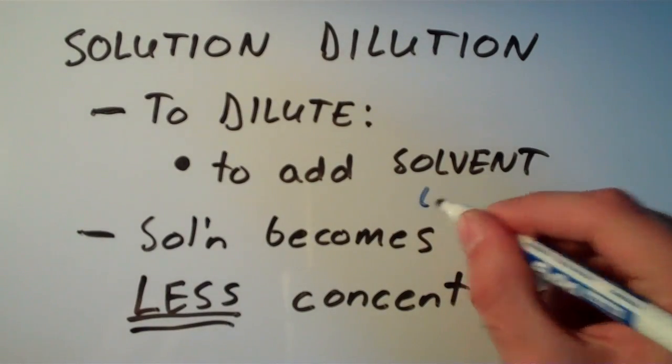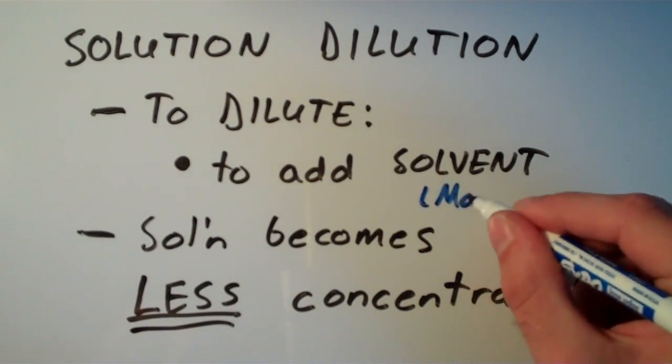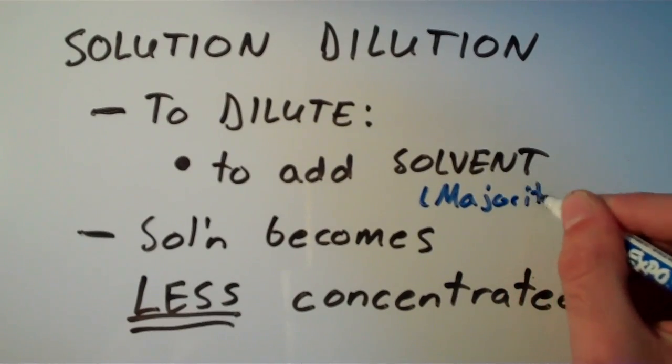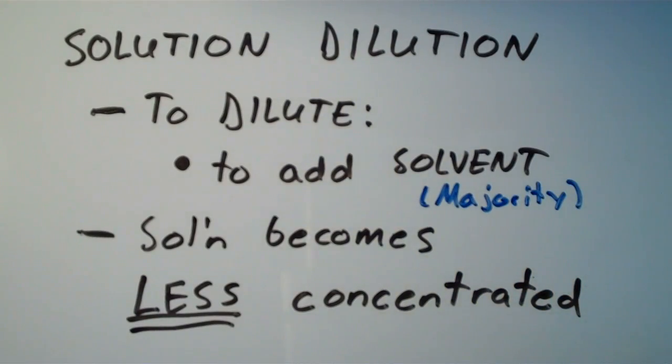Remember that the solvent is our majority component. In other words, the solvent is what does the dissolving, not what becomes dissolved. That's the solute. And when we dilute a solution, the solution becomes less concentrated.